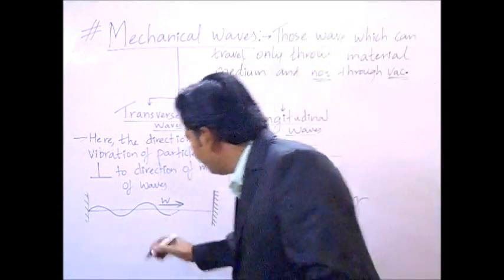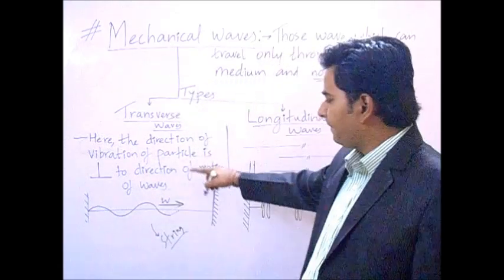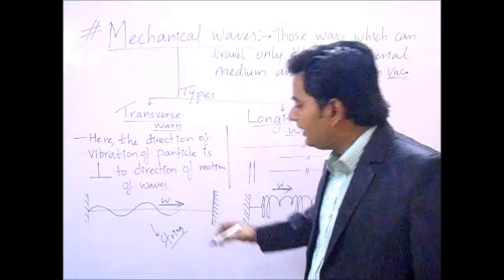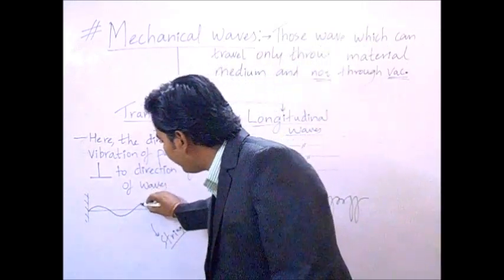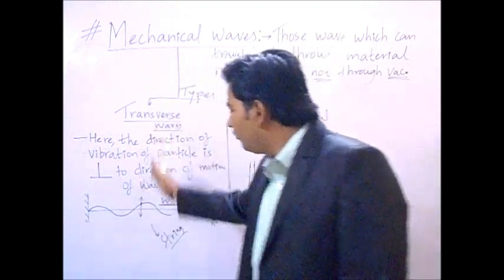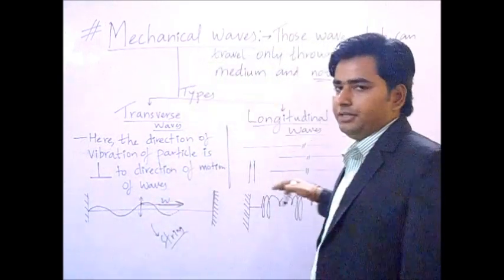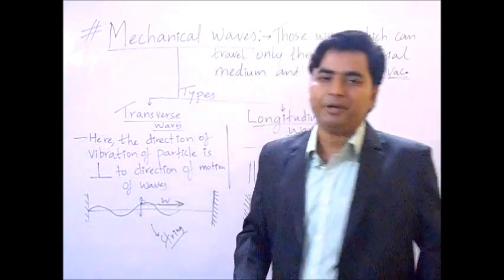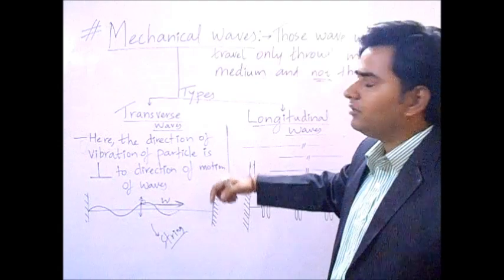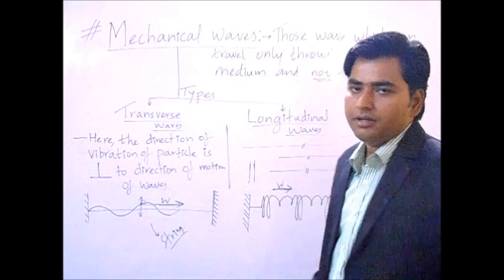An example of a transverse wave is a wave in a stream. In a stream, the wave moves horizontally, and the particles vibrate in a vertical line — only up and down motion. So the wave moves horizontally while particles move vertically, meaning they are perpendicular to each other. So in transverse waves, the particle vibration and the wave motion are both perpendicular.